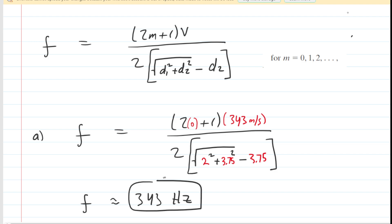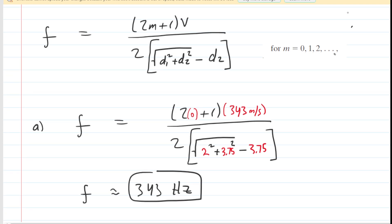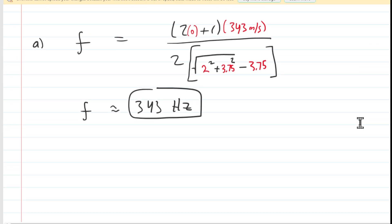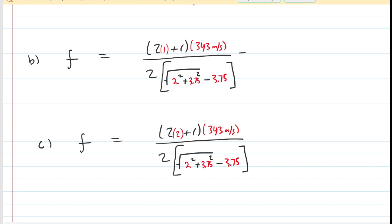For parts b and c, we want the second and third lowest respectively. So we'll plug in m equals 1 and then m equals 2 for those two parts of the question. So in part b, when we plug 1 in for m, we should get 1029 hertz. And then in part c, when we plug 2 in for m, we should get 1715 hertz.